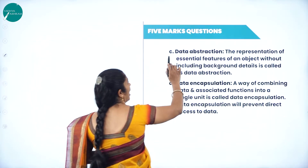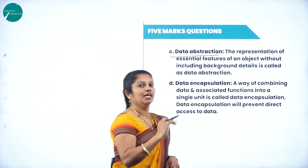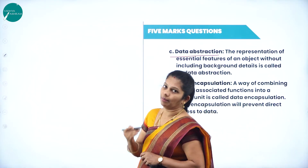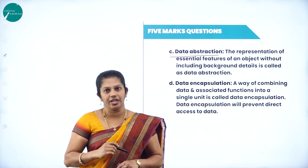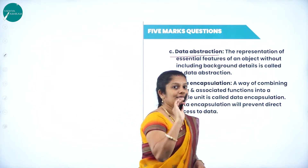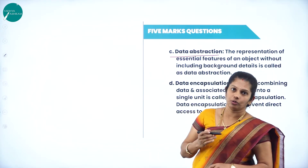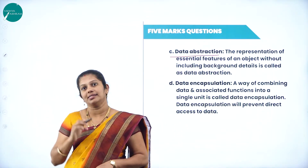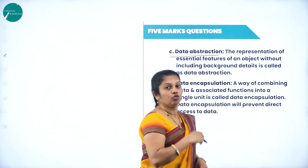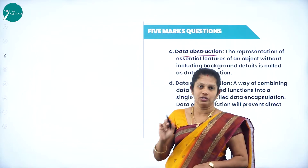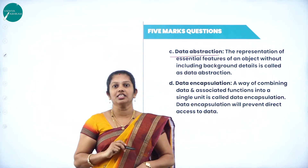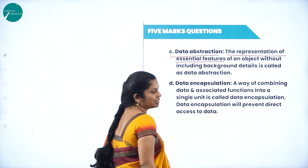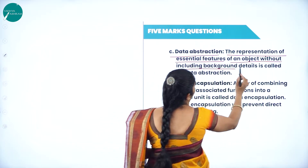The next feature is data abstraction — considering only the essential features without considering the background details. For example, I just want to ride a bike, but I am not bothered about which engine they are using or how exactly it is working. Similarly, in a mobile, I just want to send a message from one mobile to another, but I am not bothered how exactly it is sending, how much time or space it requires, or the methodology it uses. Data abstraction means representation of essential features of an object without including the background details.